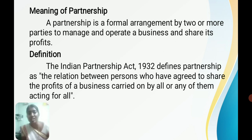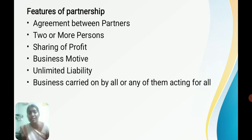On the basis of the definition, the following features are classified. The first one is agreement between parties — there should be an agreement between partners involved in the partnership firm. Next is the number of partners: two or more persons, with a minimum of two. Maximum is 10 in case of banking business and 20 in case of other business. The next point is sharing of profit — the main motive is sharing profits as per their profit sharing ratio given in the deed. If not given, they share profits and losses equally.